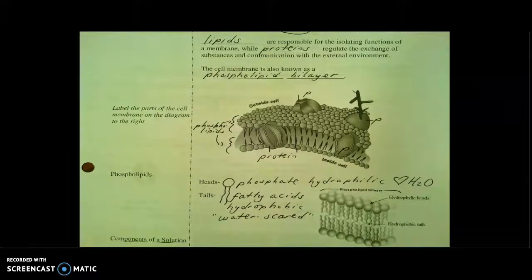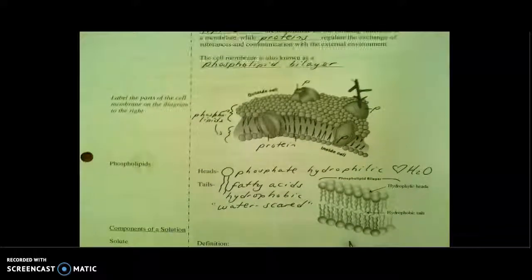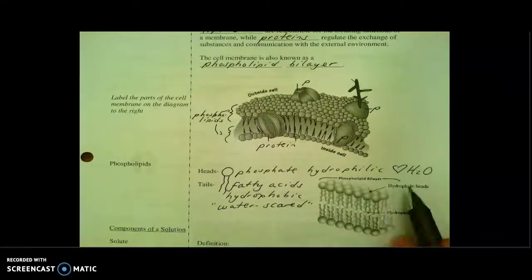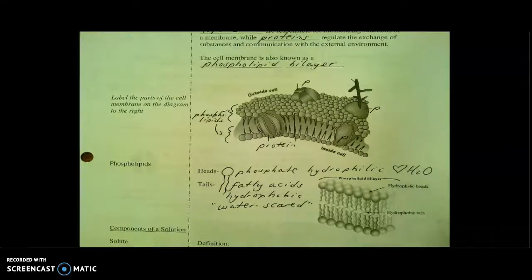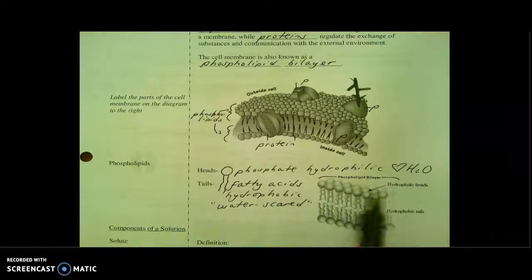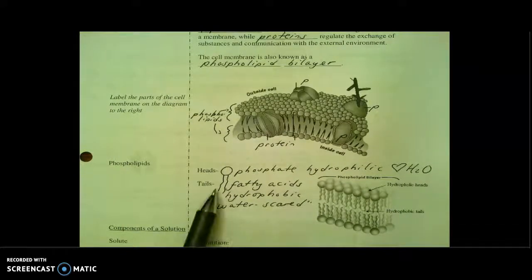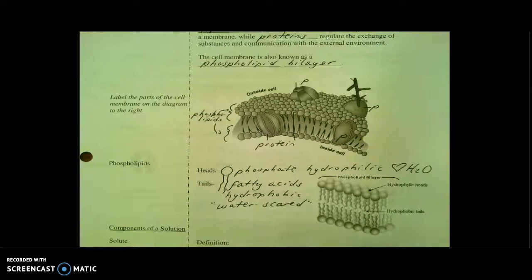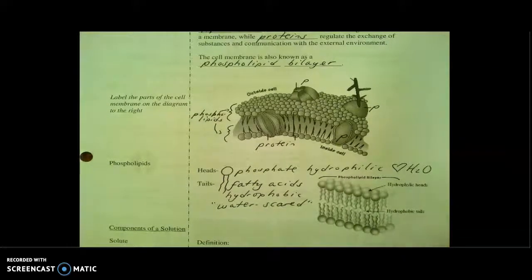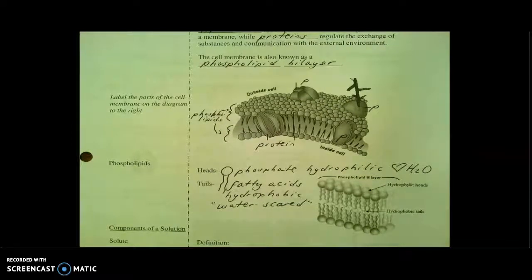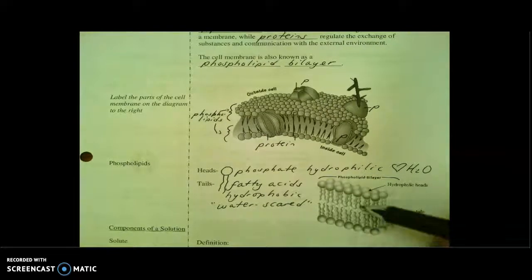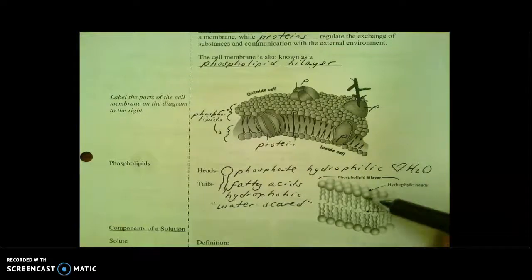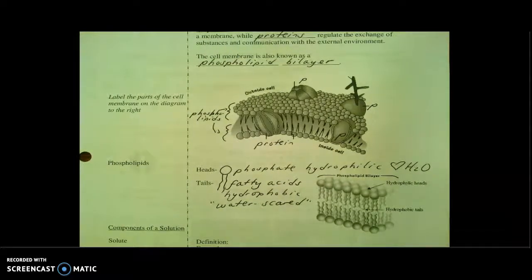So what does that actually have to do with the arrangement of this phospholipid bilayer? Well, if we think about the cell, we know that inside the cell is really watery, and we also know that outside of the cell is really watery. So we need the heads that are water loving to aim themselves towards where the water's at, both outside and inside the cell. And if the tails are water scared, they're going to hide out together away from where the water's at. So these scaredy tails are hiding out, and the heads are interacting just fine with the water outside and inside.